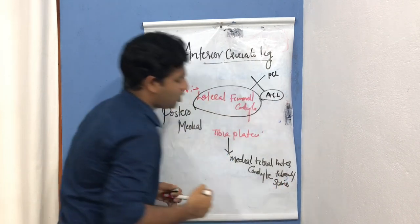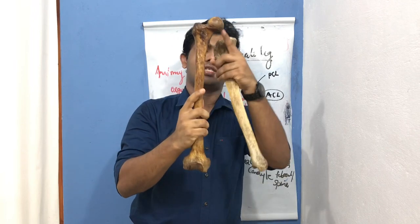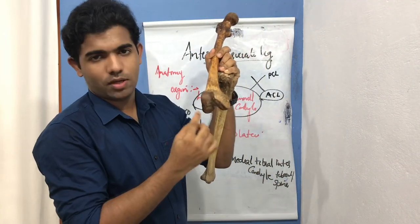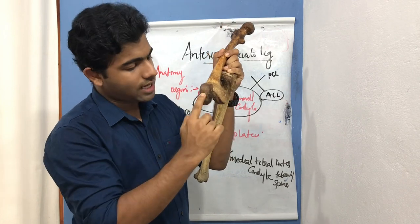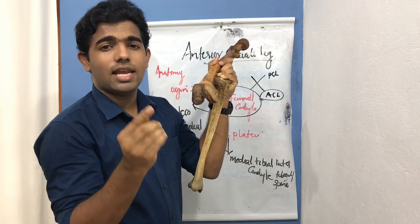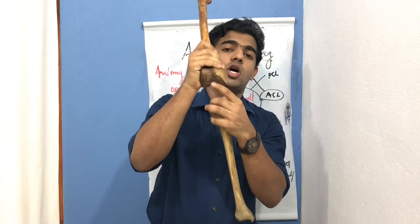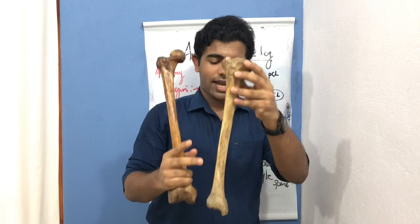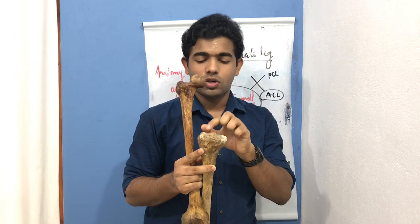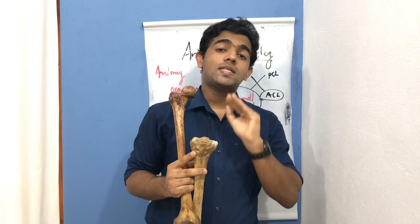Let us see this with the help of bone. This is our femur, this is the lateral condyle, this is the medial condyle, and this is the tibia. The ligament originates from the lateral condyle — not the anterior part but the posterior part, not laterally but medially — so the posteromedial aspect of the lateral femoral condyle near the intercondylar notch. It is inserted into the medial tibial intercondylar tubercle or spine, not on the articulating surface but on the intercondylar tubercle.